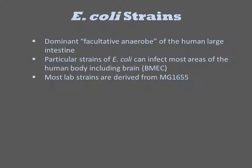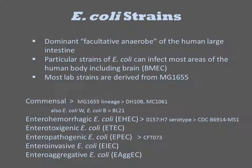The extreme majority of strains that people use in labs today are derivatives of MG1655. E. coli strains are most often further characterized by types of virulence present in specific strains. Note that many of the strains are commensals, including the MG1655 lineage, E. coli W, and E. coli B lineages. Commensal means they persistently reside in hosts but do not cause any observable harm.